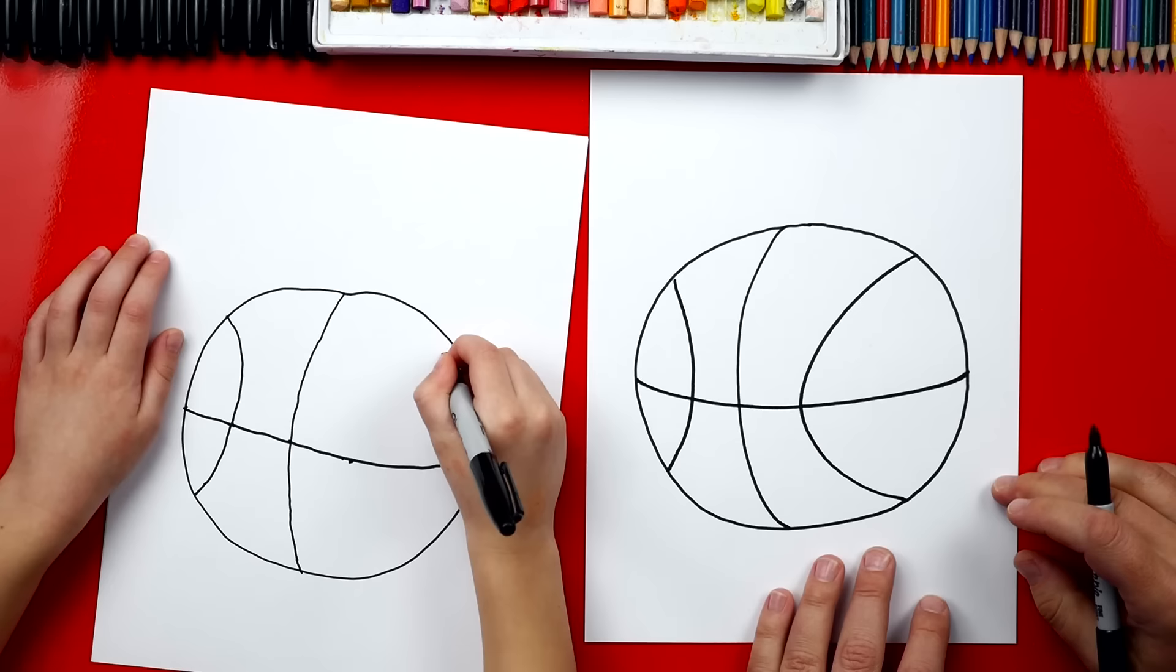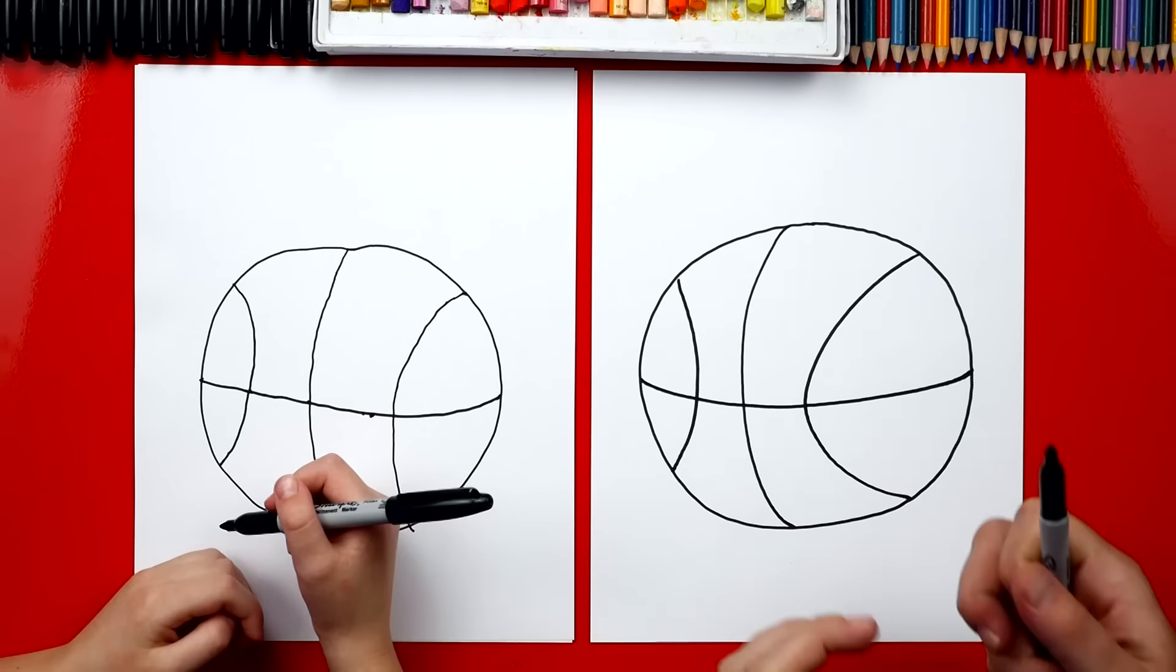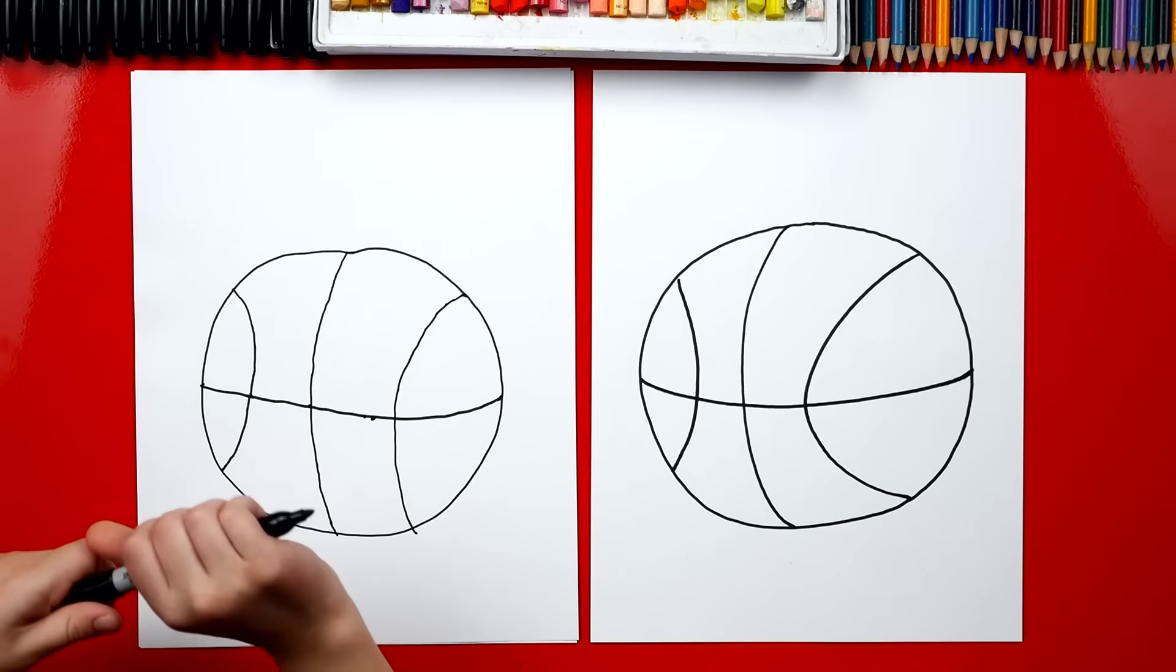All right, we did it. We finished drawing our basketball. That was pretty easy, wasn't it? Yeah. Now we still need to do one last thing. What is it? Coloring. This part we're going to fast forward, but at the end you guys can match the same color. You ready to fast forward? Yeah.